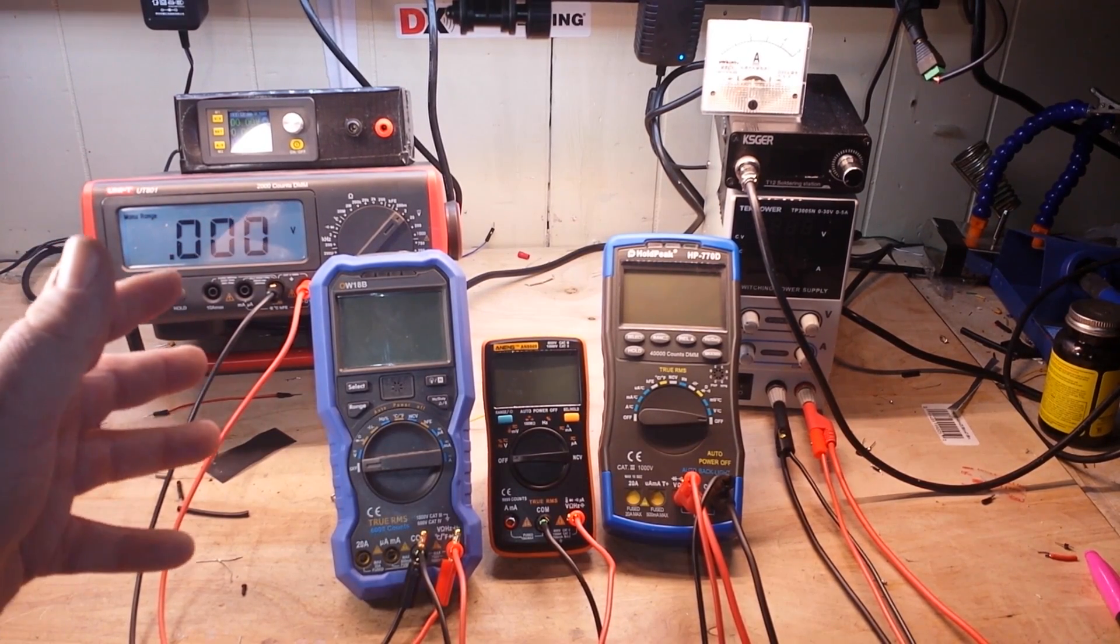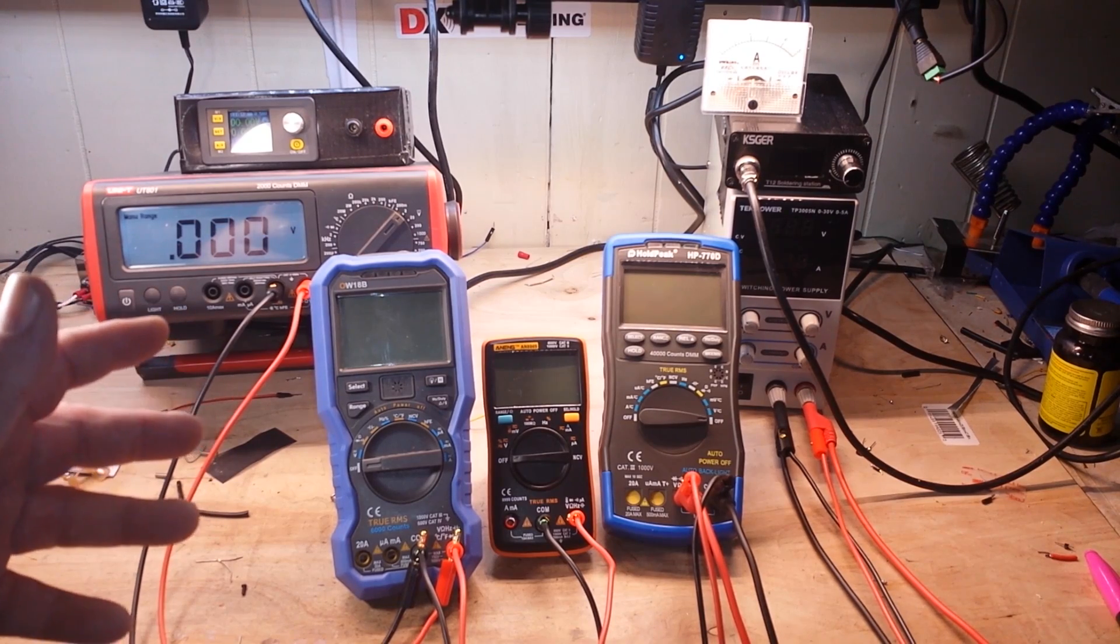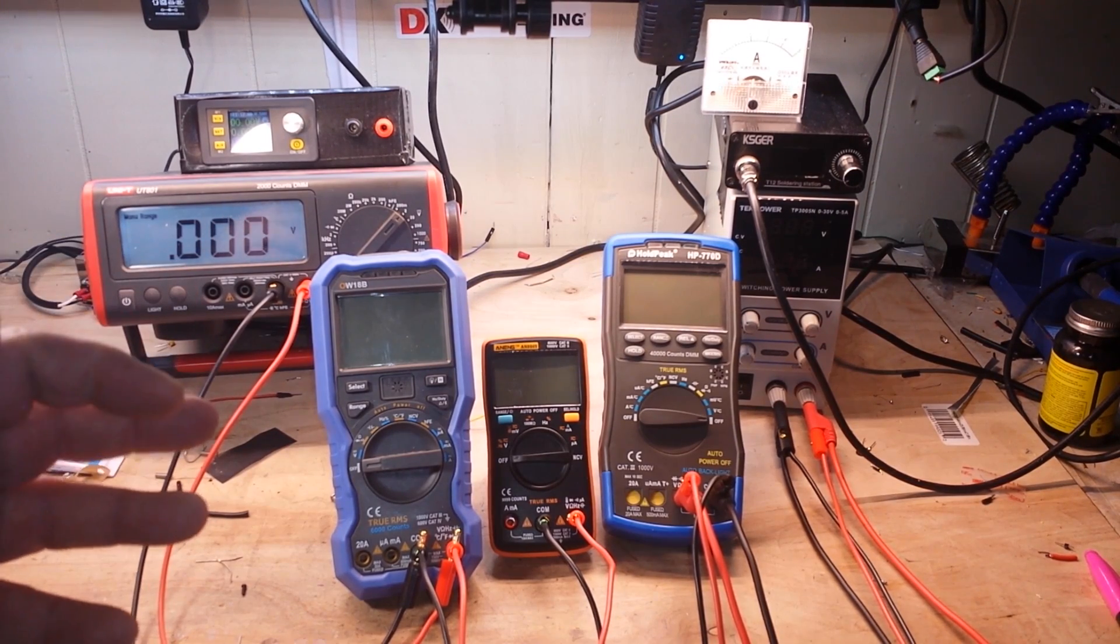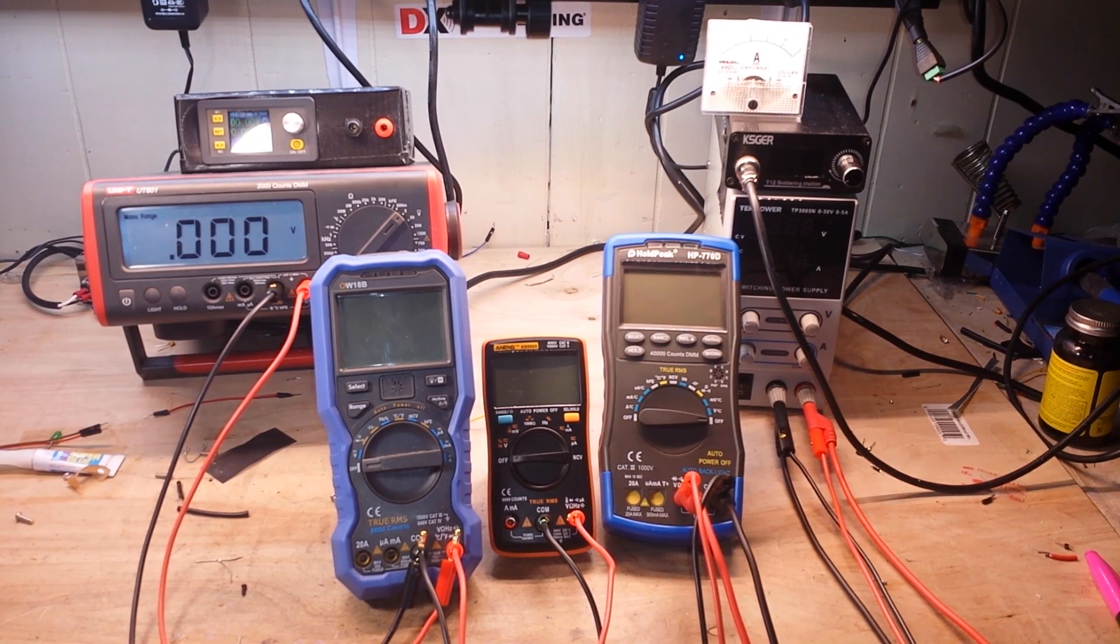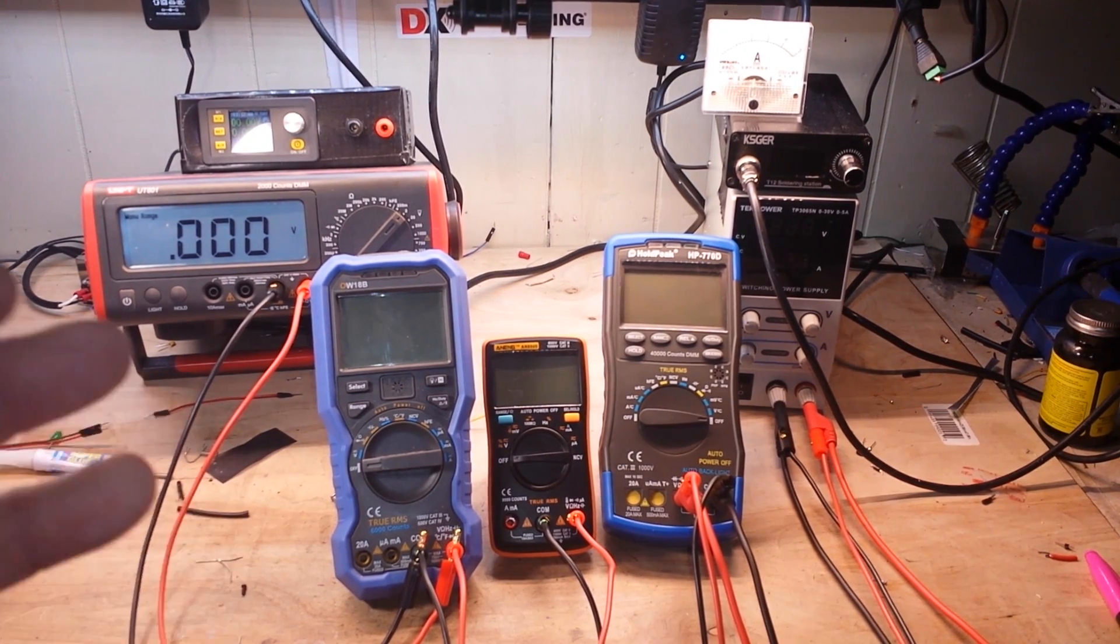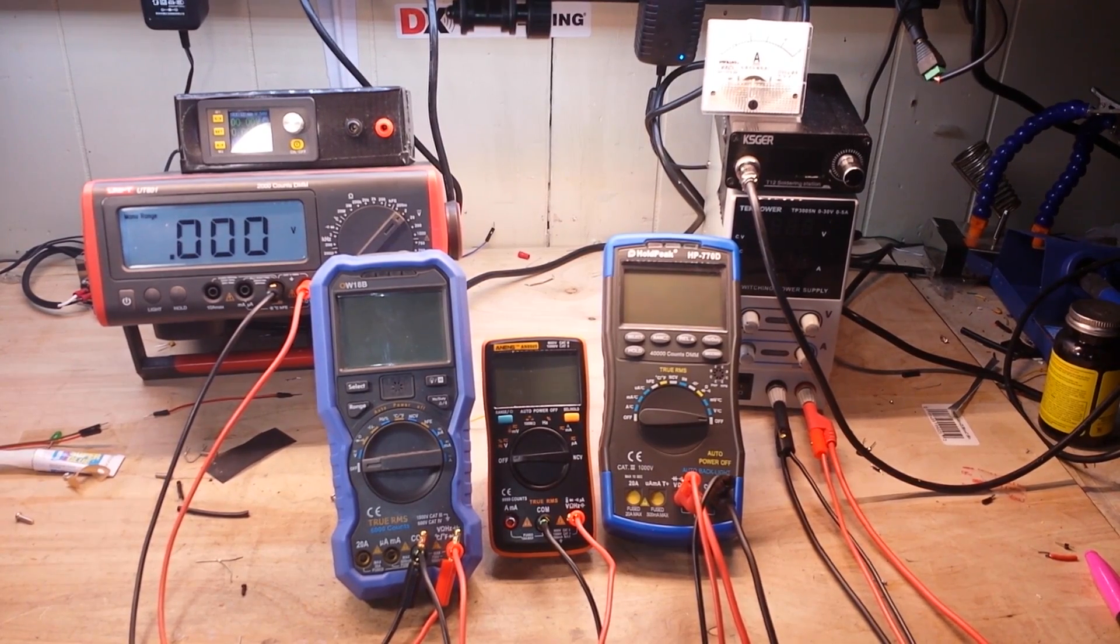A meter that has 50,000 counts for instance can read 49.999 volts, but when you try to go to 50 volts, it will read 50.00, so you are losing a digit of resolution. So that is all it is, it is a way to show resolution.